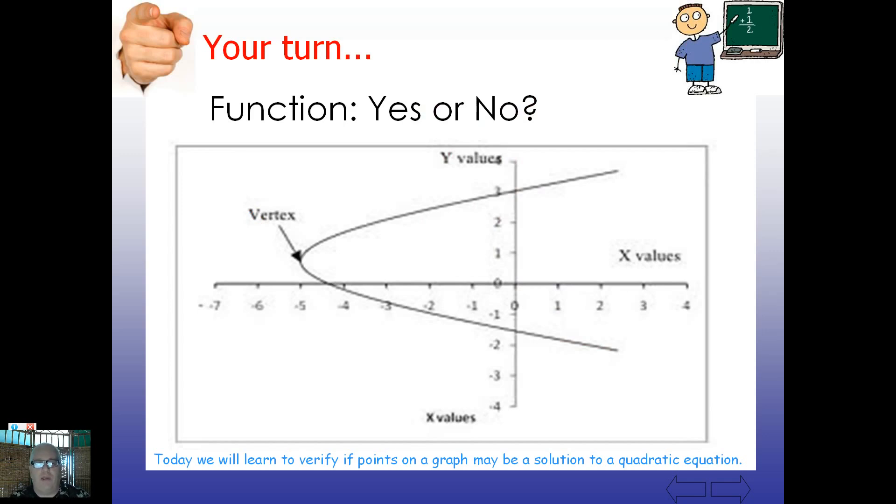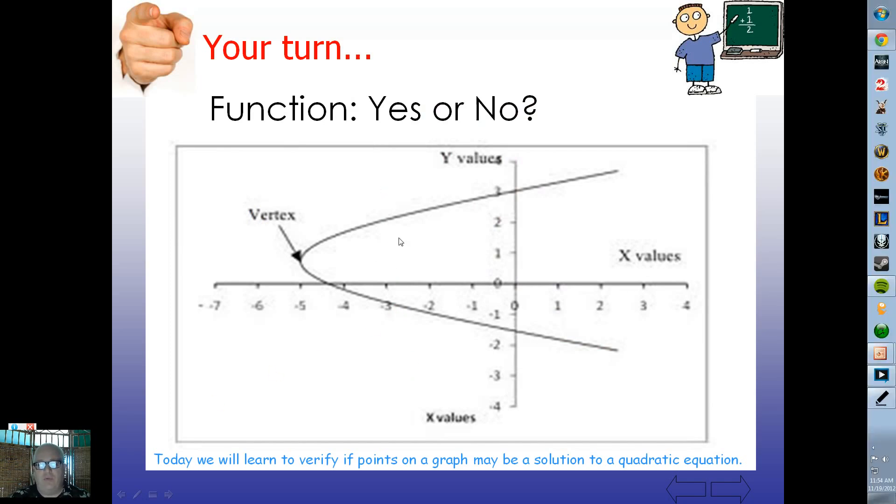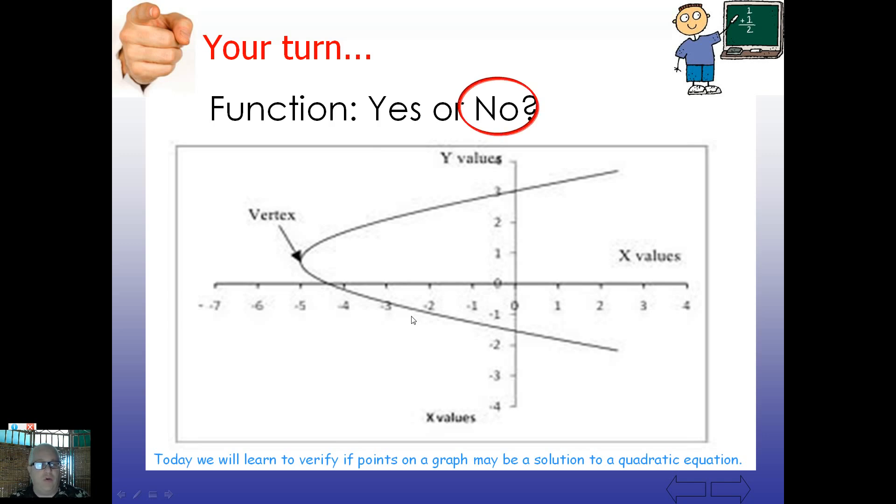All right your turn. You tell me now. If you just had an imaginary line here and we drew a line and crossed it through this function, you can just pick any old line you want. Let's just say we draw a line straight down here. Does that touch the graph at one time only? Or more than one? Well obviously it's going to touch it more than one. So our answer here is no. It's not a function.